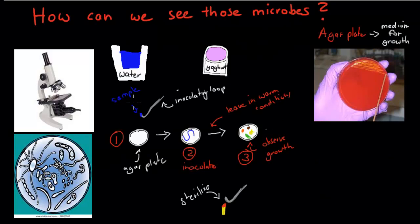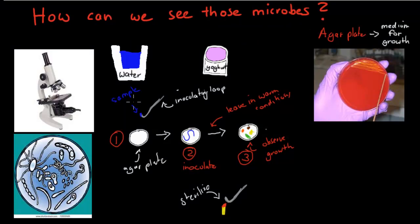But if we have so many microbes all around us, how could we see those microbes? The easiest way would be to grab a microscope and look at a sample of water or yogurt under it. You grab some food or some water, put it under the microscope, and you can see those actual microbes.